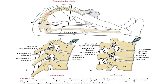Flexion and extension motion in the thoracic spine is less compared to the lumbar region because of the orientation of facets in the frontal plane, making lateral flexion and rotation the predominant motions in the thoracic spine.